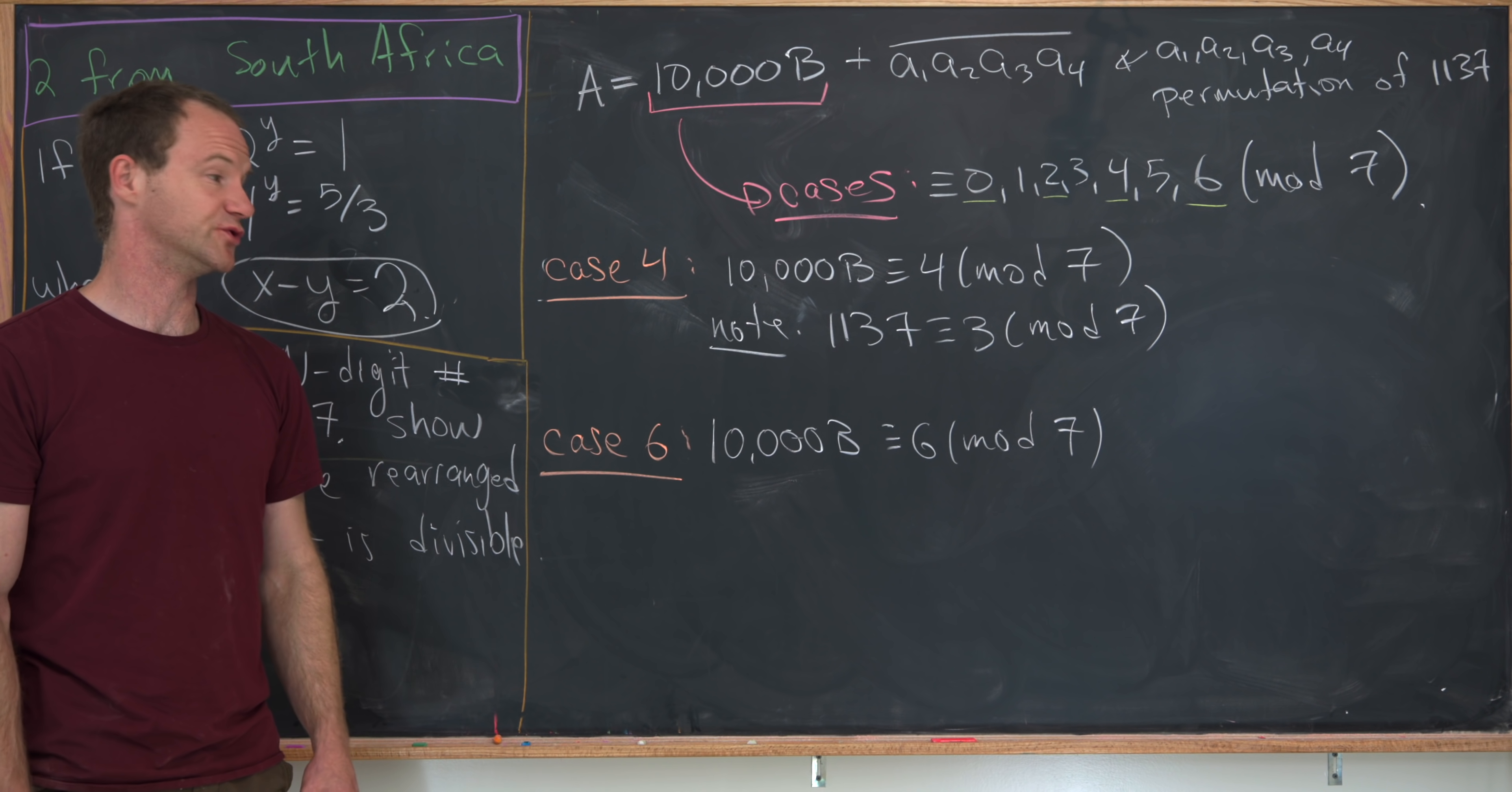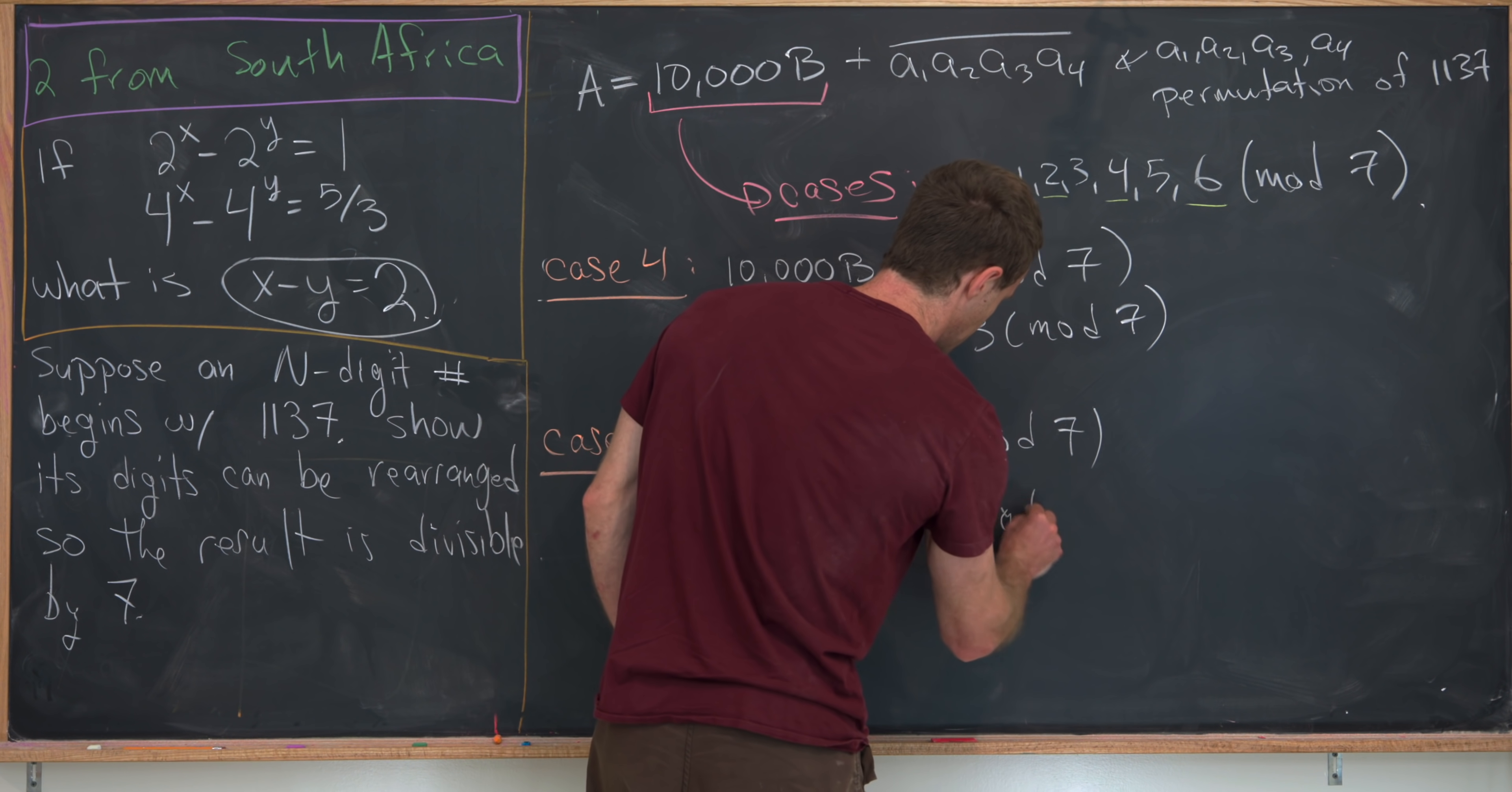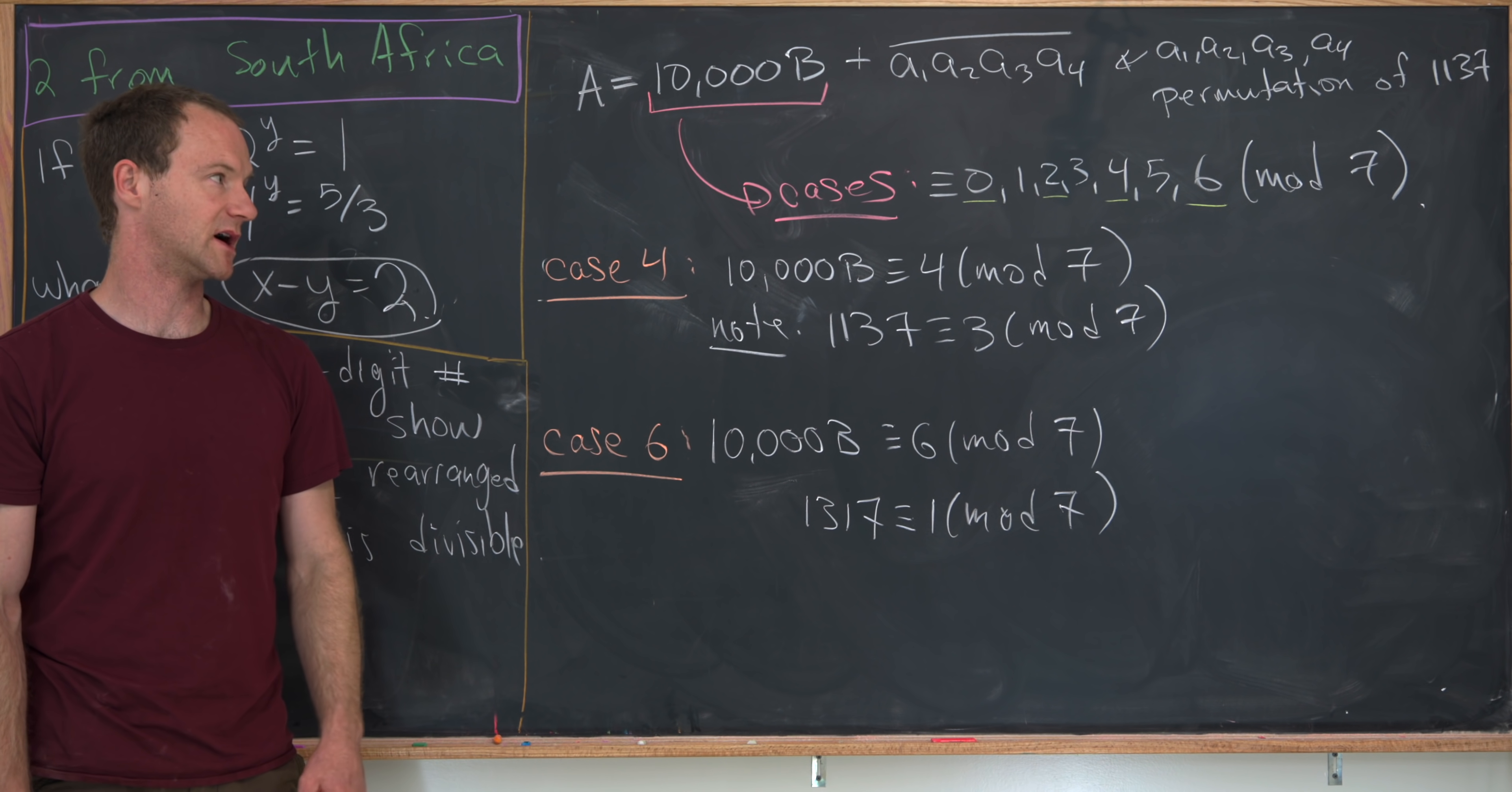So the last case is when 10,000 b is congruent to 6 mod 7. And again, by trial and error, we can see that 1, 3, 1, 7 is congruent to 1 mod 7. But if that's congruent to 1 mod 7, then when we take the sum, it'll again be congruent to 0 mod 7, thus divisible by 7.